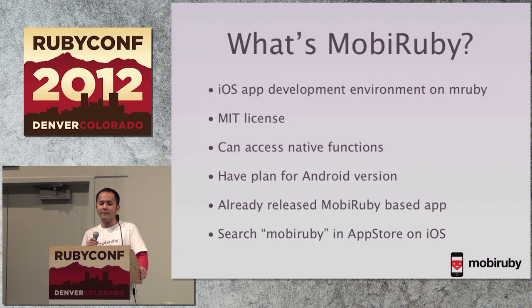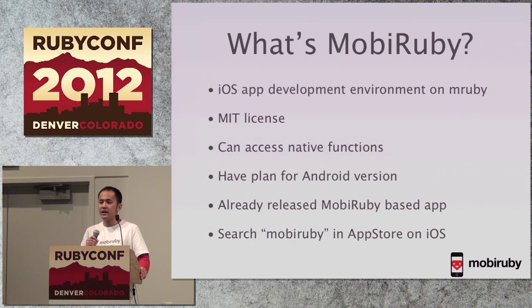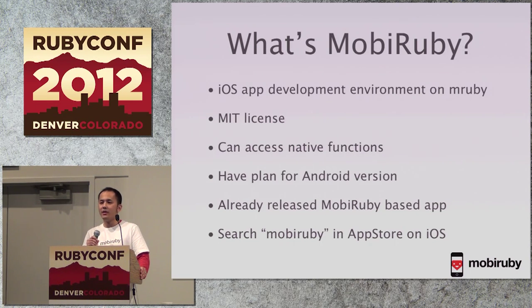Now I'm working on MobiRuby, a competitor of Titanium Mobile. MobiRuby is my private project — it is not for business. MobiRuby is an iPhone application development environment built on mRuby. You can create iOS applications using Ruby. mRuby provides a bridge between Cocoa and mRuby, so you can call native classes and functions instead of Objective-C. Currently MobiRuby supports iOS only, but I have planned an Android version — I've confirmed mRuby can run on Android devices.